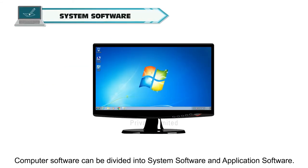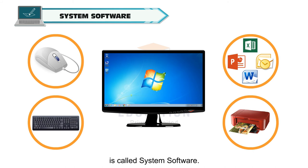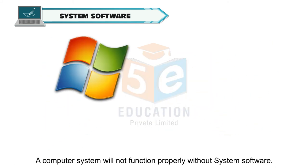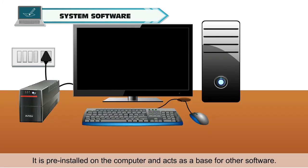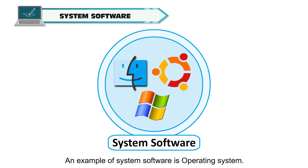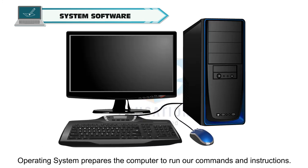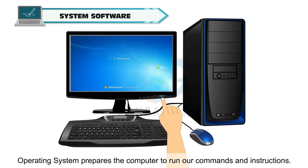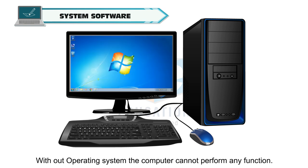Software that controls and manages the working of a computer is called system software. A computer system will not function properly without system software. It is pre-installed on the computer and acts as a base for other software. An example of system software is an operating system, which prepares the computer to run our commands and instructions. Without an operating system, the computer cannot perform any function.